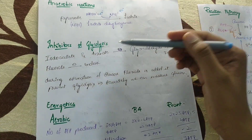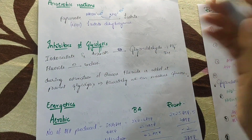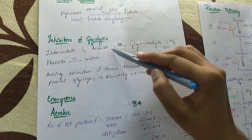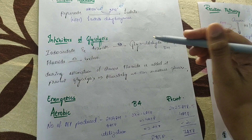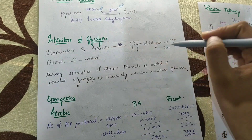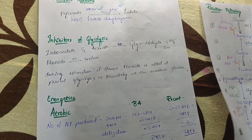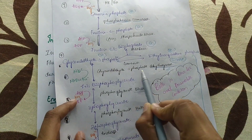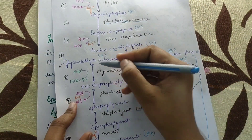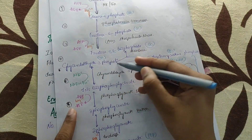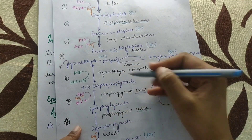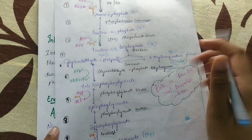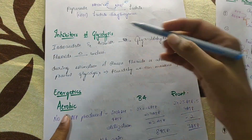Now, inhibitors of glycolysis — inhibitors means substances that stop glycolysis. The inhibitors iodoacetate and arsenide stop glycolysis by inhibiting the enzyme glyceraldehyde-3-phosphate dehydrogenase. So conversion of glyceraldehyde-3-phosphate to 1,3-bisphosphoglycerate is inhibited, and glycolysis stops at this position.